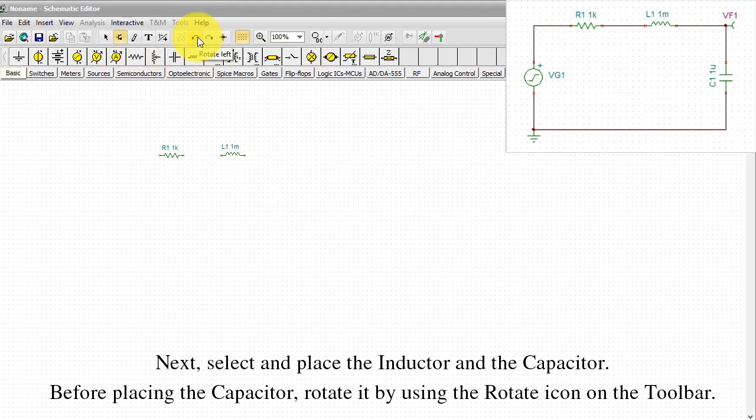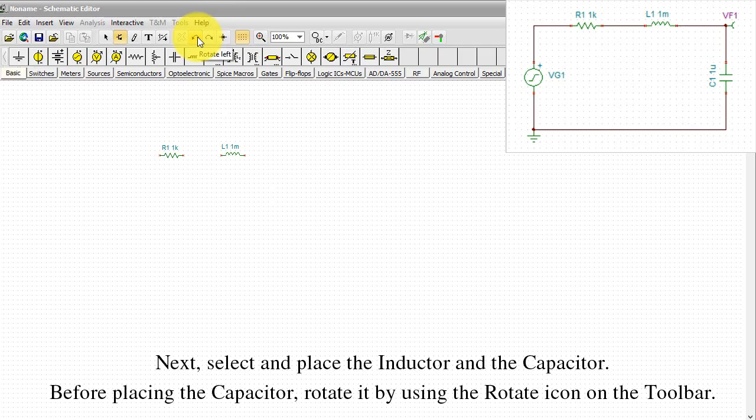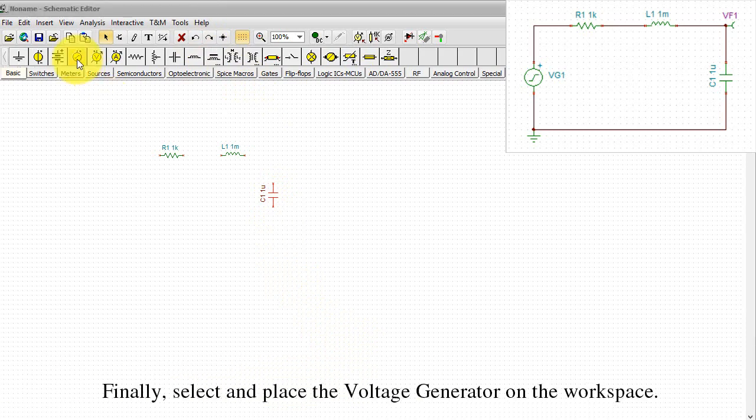Before placing the capacitor, rotate it by using the rotate icon on the toolbar. Finally, select and place the voltage generator on the workspace.